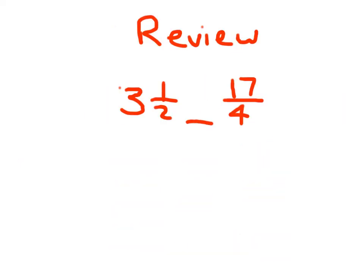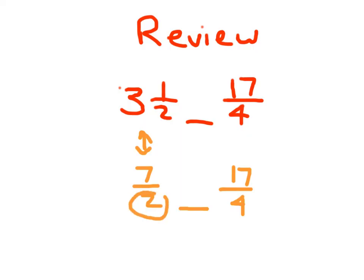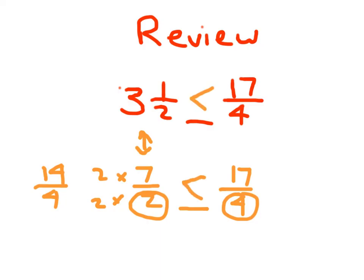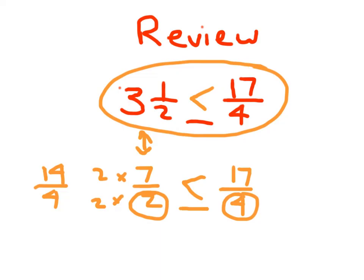If asked to compare these, there are two approaches. You need to make sure they are both the same on both sides — both mixed numbers or both improper fractions. 3 and 1 half as an improper fraction is 7 halves. But you're not done — you still have 7 halves and 17 fourths with different denominators. Multiply numerator and denominator of 7 halves by 2 to get 14 fourths. 14 is less than 17, so 14 fourths is less than 17 fourths, meaning 3 and 1 half is less than 17 fourths. You must have a common denominator and compare the same types of numbers.